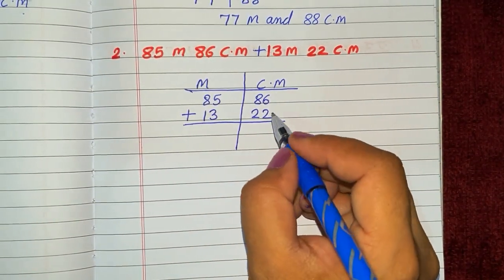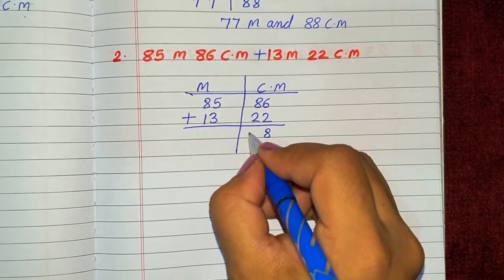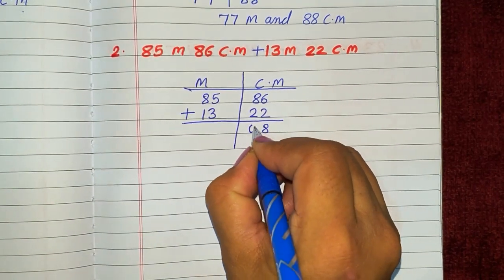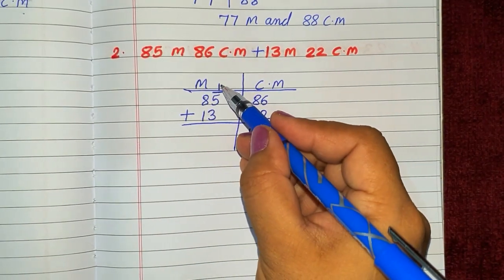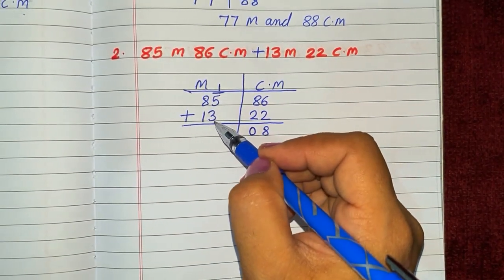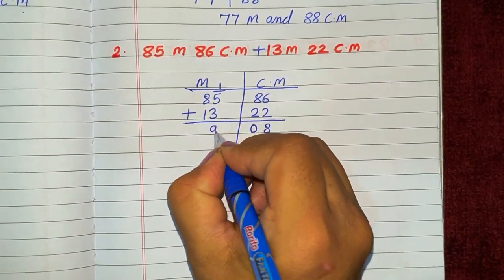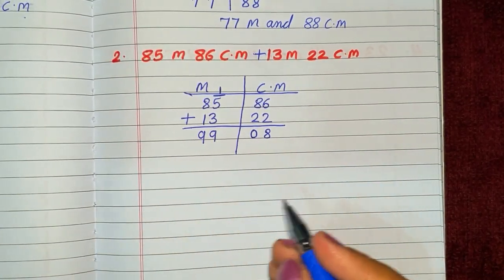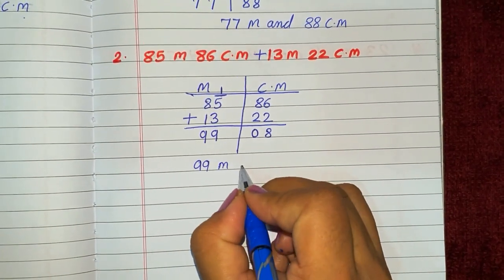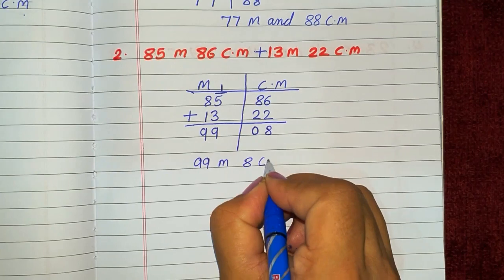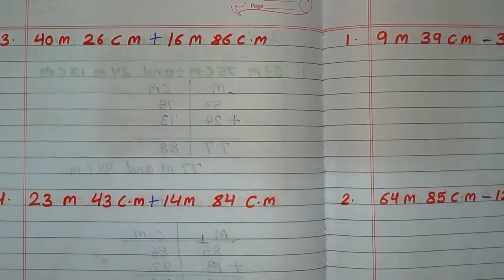6 plus 2 is equal to 8. 8 plus 2 is equal to 10, so we write 0 here and carry 1. Then 5 plus 1 is 6, 6 plus 3 is 9, and 8 plus 1 is 9. So the total sum is 99 meter and 08 centimeter.